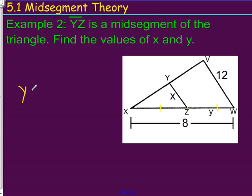So, Y is going to equal 4. Now, what about X? For X, we actually have to think about our mid-segment theorem, which states that X is going to be half of Y.